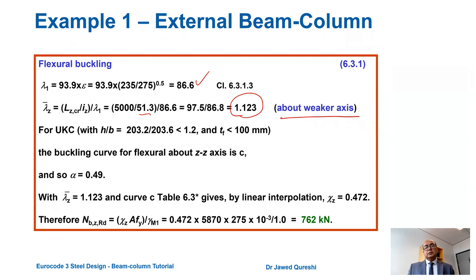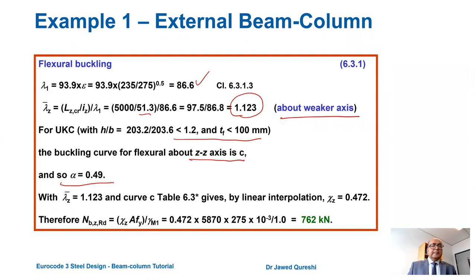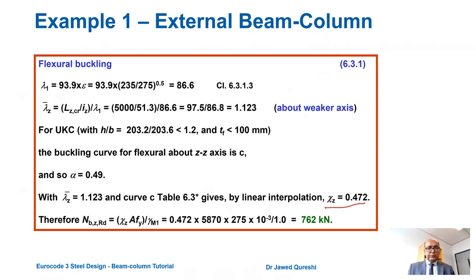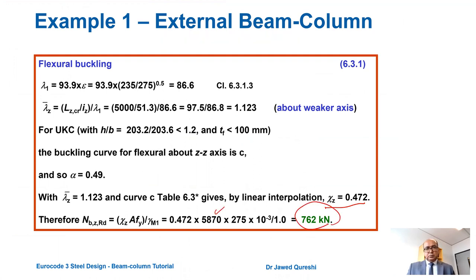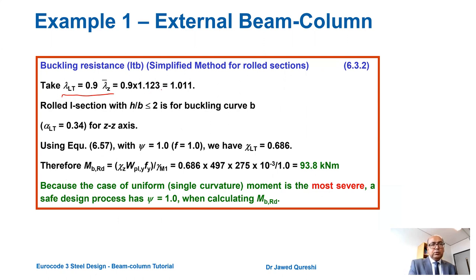For lambda dash Z equal to 1.12 and curve C from table 6.3, by linear interpolation we get a chi value of 0.472. NBZRD is chi times A times fy over gamma M0. A is from the section table and we get NBZRD as 0.762. For lateral torsional buckling, I use the simplified formula: lambda dash LT equals 0.9 times lambda dash Z, giving 1.01. For rolled I-sections with h/b less than 2, I will use curve B.